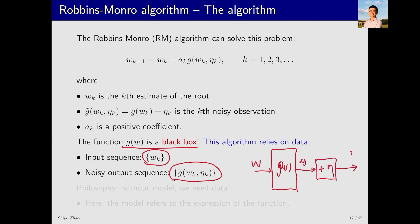That is, we input w and get g tilde. Initially, we input w1 and get g tilde 1. We then use this to compute w2. Inputting w2 yields g tilde 2, which is then used to get w3 and so on. So, we have a sequence wk and a sequence g tilde k. The RM algorithm solves the problem through this iterative process.